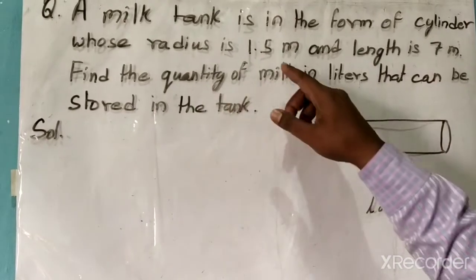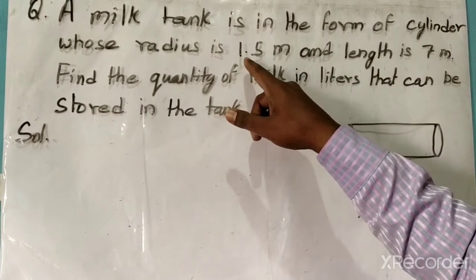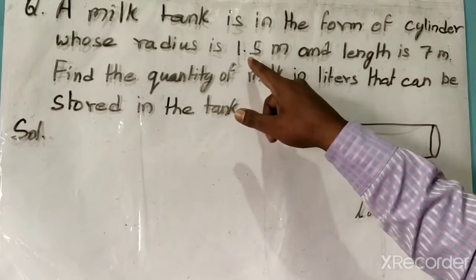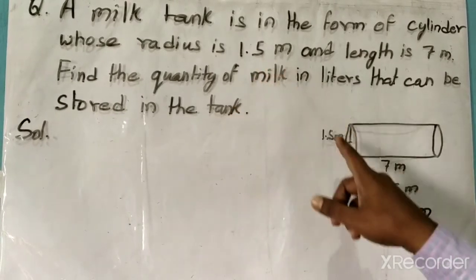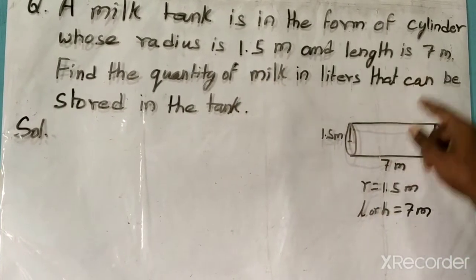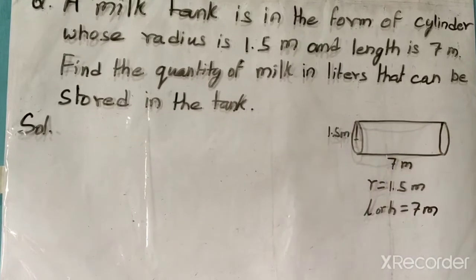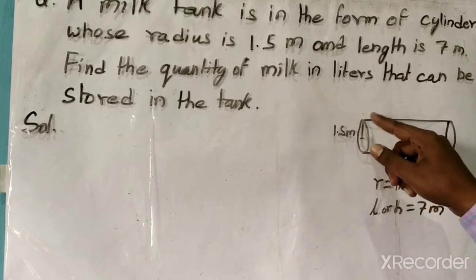Let's come to the question. In the question it is given that the tank is in the form of a cylinder, and the radius is 1.5 meters and length is 7 meters. This I have drawn for your convenience, so this is cylindrical in shape.